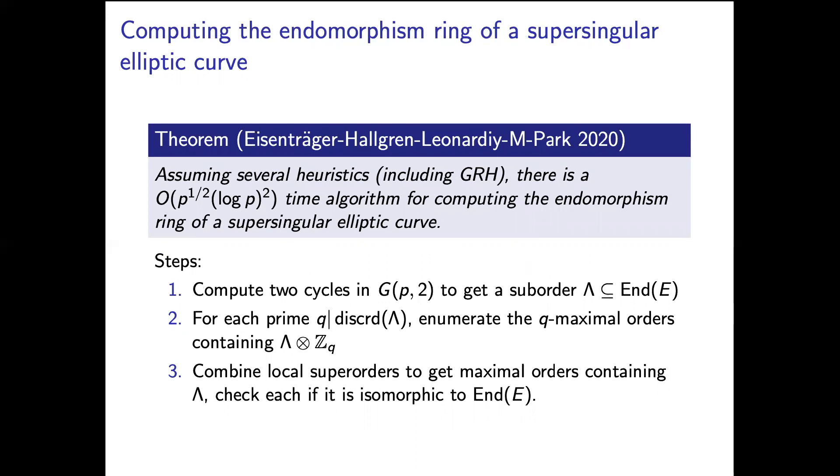So again our algorithm is going to have time p^(1/2) × (log p)^2. And here's an overall outline of what we're going to do. So we're going to start off by computing two cycles in the isogeny graph to get a suborder of the endomorphism ring much like Kohel does. And this step we're going to do in this time here p^(1/2) × (log p)^2 again assuming say GRH. So now we have a suborder and we want to find the correct maximal order containing our suborder which is the endomorphism ring.